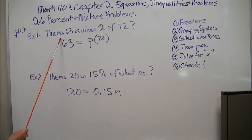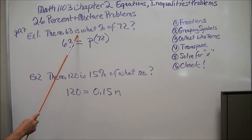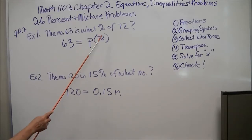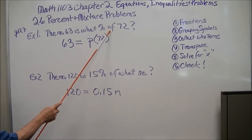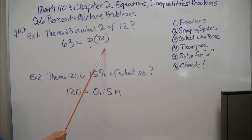For example, it says the number 63 is what percent of 72? Now you might think of that in an arithmetic way, but we want you to set it up in an algebra way. So the number 63 is what percent, that's what you don't know, use p for percent. Of, remember, is times. So that's the equation for this one.